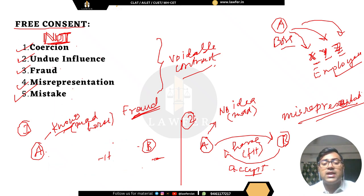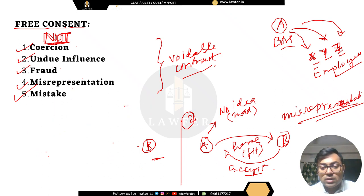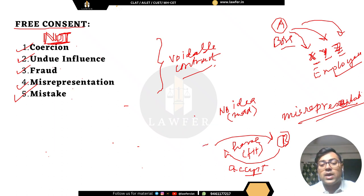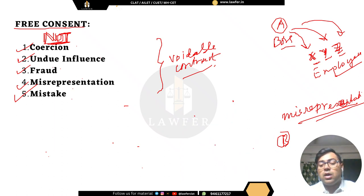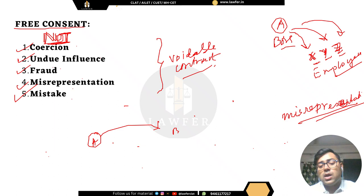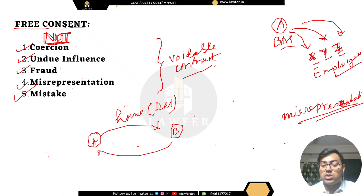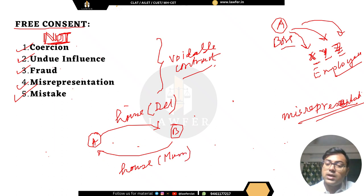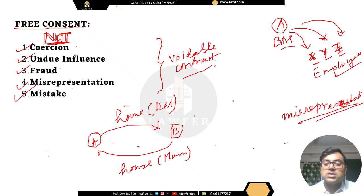Fifth is mistake. If there is any mistake, the contract will be void. For example, A offered B a house in Delhi, but B thought A was trying to sell a house in Mumbai — B accepted under that mistaken belief. This will not be a valid contract because there was a mistake.